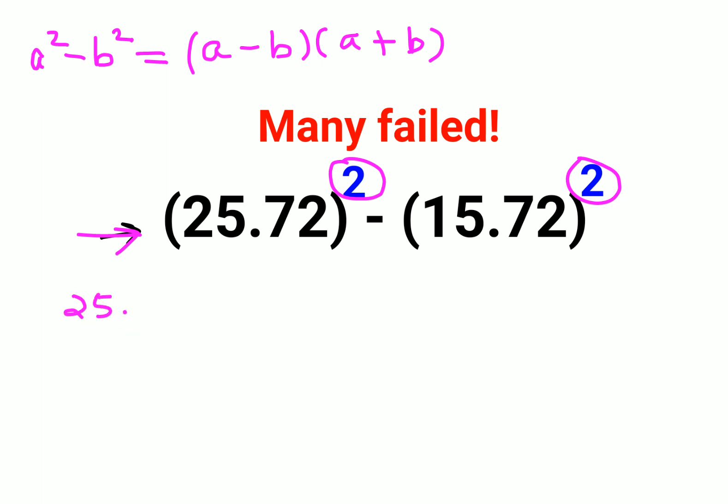25.72 minus 15.72 into 25.72 plus 15.72. So now what you do is you just do the subtraction and this addition and multiply your answers, and that is how you will get your final answer.